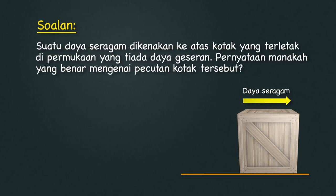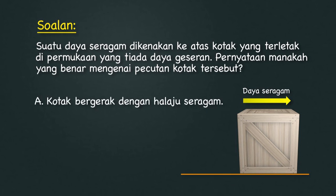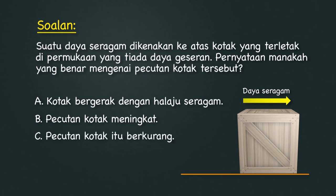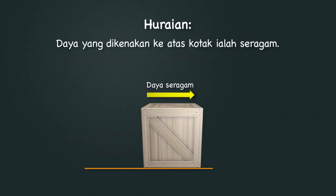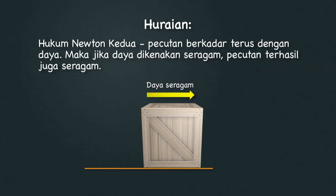Suatu daya seragam dikenakan ke atas kotak yang terletak di permukaan yang tiada daya geseran. Pernyataan manakah yang benar mengenai pecutan kotak tersebut? A. Kotak bergerak dengan halaju seragam. B. Pecutan kotak meningkat. C. Pecutan kotak itu berkurang. D. Pecutan kotak itu seragam. Jawapan, D. Daya yang dikenakan atas kotak itu adalah seragam. Mengguna pakai hukum Newton kedua, pecutan berkadar terus dengan daya. Maka, jika daya yang dikenakan adalah seragam, sudah tentu pecutan yang terhasil juga seragam.